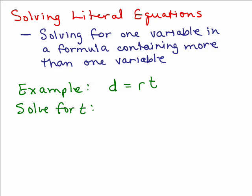So an example would be our common distance equals rate times time, usually written d = rt. Remember that means r times t. So let's say we are going to solve for t.